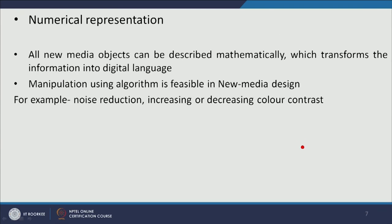Starting with numerical representation: all new media objects can be described and represented mathematically. The information stored in a computer is mathematical information which transforms into a display system. We do not see the mathematical code behind the new media design — we see a visible display: text, videography, sound, or still pictures.